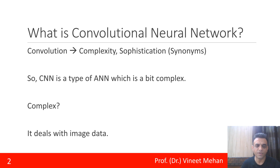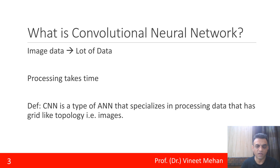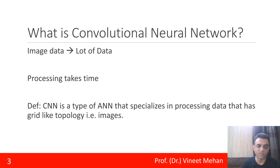CNN is complex because it deals with image data. In images there is a lot of data, and when there is a lot of data, processing takes time. The definition of CNN is: it is a type of artificial neural network that specializes in processing data that has grid-like topology, and that grid-like topology exists in images — that is why CNN deals with images.